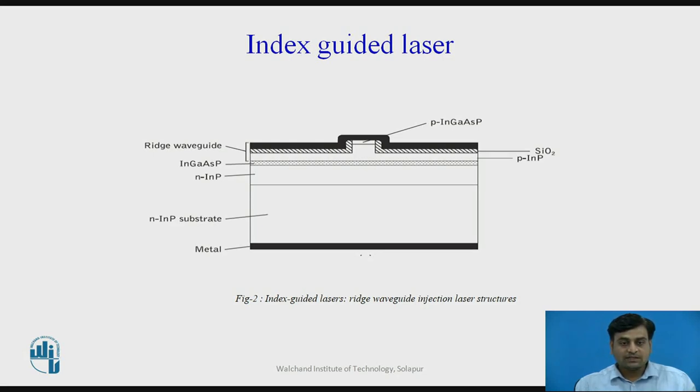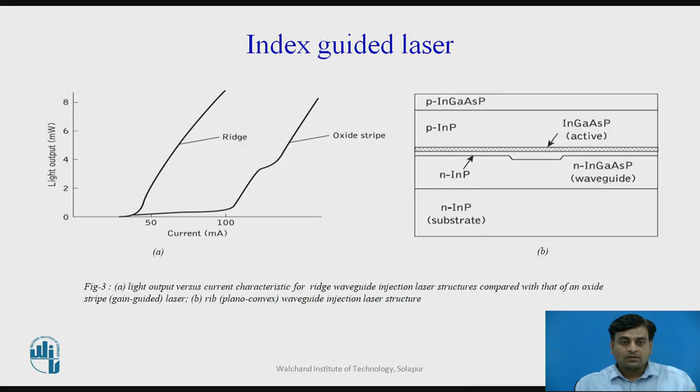More typically, the threshold currents for such weakly index guided structures are in the range of 40 to 60 mA.